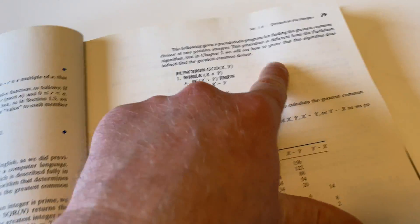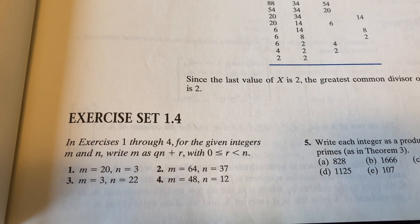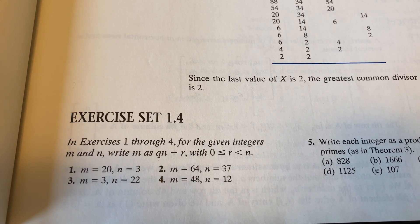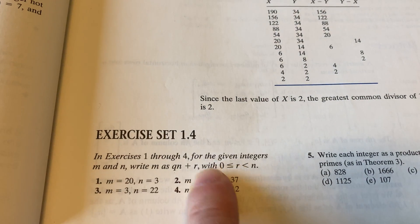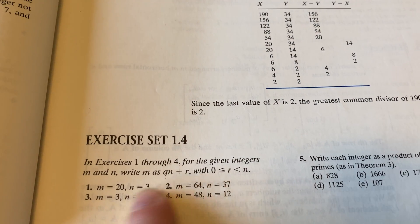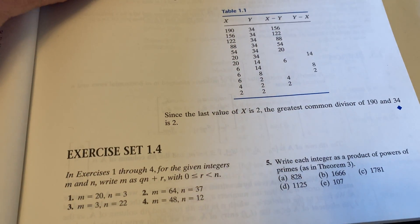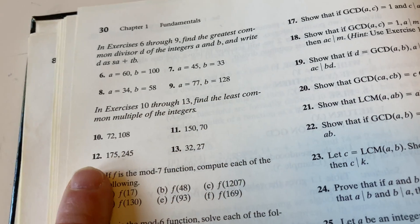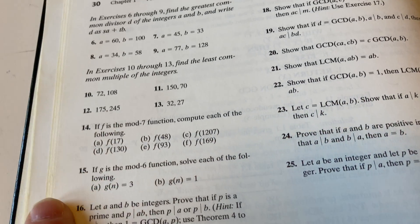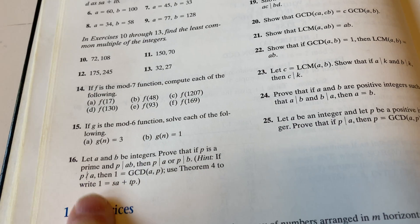This is 1.4, which is on the division of integers. Let's look at some of the exercises here. So an exercise is 1 through 4 for the given integers, m and n. Write m as qm plus r with r between 0 and n. So basically they're saying apply the division algorithm with m and n, right? So that's kind of cool. It gets you used to the algorithm and the way it works. So that's computational. And then here they're asking you for the greatest common divisor. So more computational. Here you do a couple more computational ones. Here you do some stuff with mod functions. And then here you have a little proof.